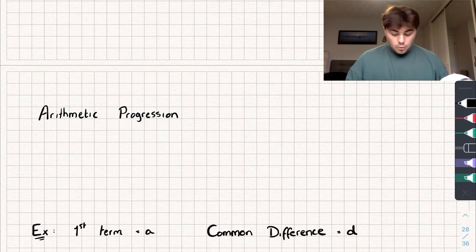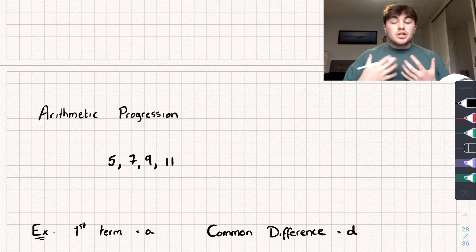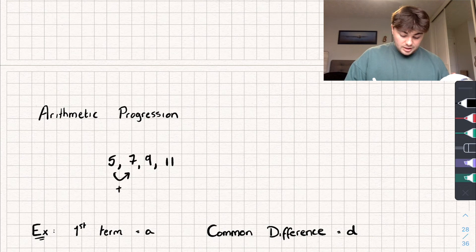Okay, so as an example, a linear sequence could be 5, 7, 9, and 11. And that's linear because each time between the terms we are increasing by plus 2.